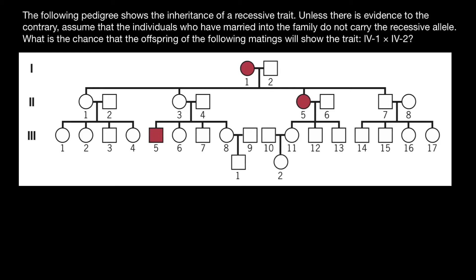Hello, and welcome to Nikolai's genetics lessons. Today's problem is the following: the pedigree shows the inheritance of a recessive trait. Unless there is evidence to the contrary, assume that the individuals who have married into the family do not carry the recessive allele. What is the chance that the offspring of the following matings will show the trait IV-1 and IV-2?